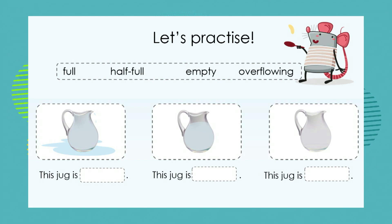The words in the word box are full, half full, empty, and overflowing. If we look at the first picture, which word best describes this jug — would you say it is full, half full, empty, or overflowing? This jug is overflowing. Can you tell me why, grade ones?